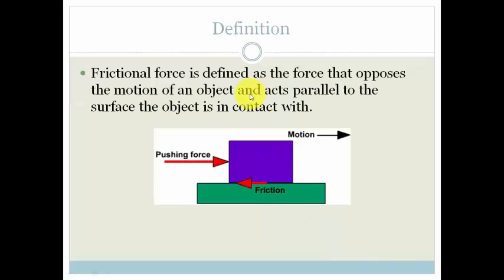Let's look at the definition. Frictional force is defined as the force that opposes the motion of the object, and it acts parallel to the surface that the object is in contact with. If we have a pushing force here, a guy or a girl pushing the block this way, then the force of friction is going to be in the opposite direction to the motion, and it is always parallel to the surface, and that is very important.